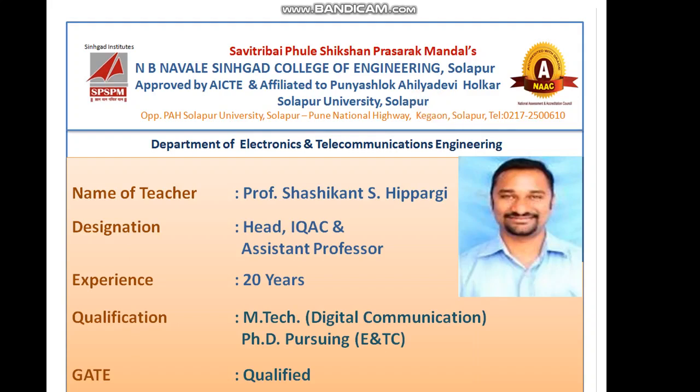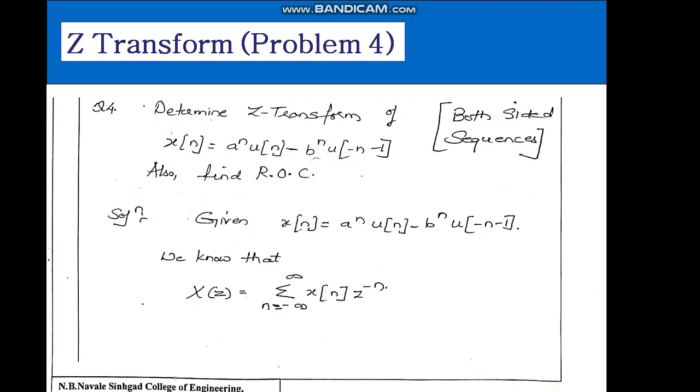Welcome back to this session. In the previous session we have seen x(n) equal to u(n), x(n) equal to a raised to n u(n), and x(n) equal to minus b raised to n u of minus n minus 1. So three questions we have seen. Now we will talk about the combination of both left-hand side and right-hand side sequences, taking the combination of these two.